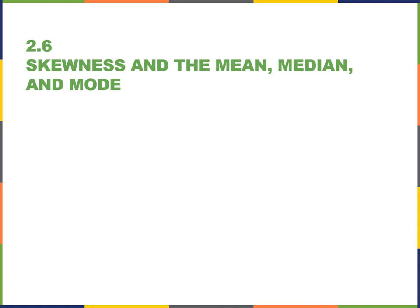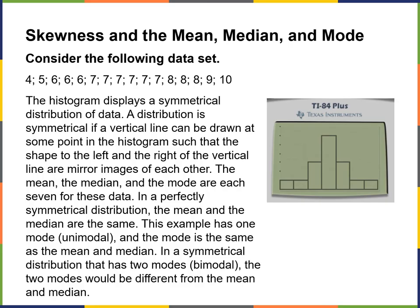Let's talk about skewness and the mean, median, and mode. Consider this following dataset — looking at it, you can see that the mode is seven. This histogram displays a symmetrical distribution of data. The distribution is symmetrical if a vertical line can be drawn at some point in the histogram such that the shape on the left and right are mirrored images of each other or pretty close to it.